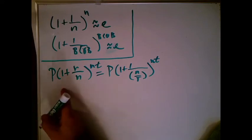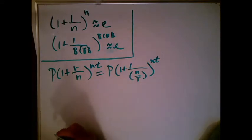Now, all I did was rewrite my compound interest formula so it looks like one plus one over. Now, in order to get E involved, the denominator and the exponent have to be the same number. Well, my number over here is N over R.